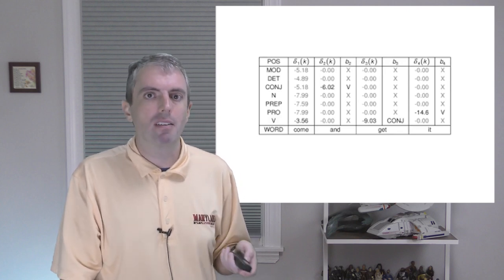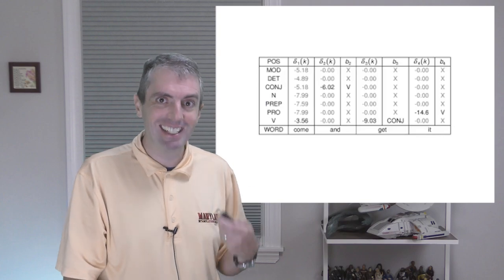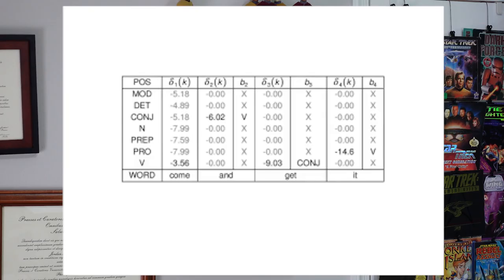When we want to figure out the best part-of-speech sequence for the entire sentence, we look at the very last time step, find the element in that column with the highest probability, then follow the breadcrumbs back. In this case, the highest probability subsequence ends in a pronoun, then we follow the breadcrumbs back in reverse order. This gives us verb conjunction verb, and then we put it all together and get the best part-of-speech sequence for the sentence.